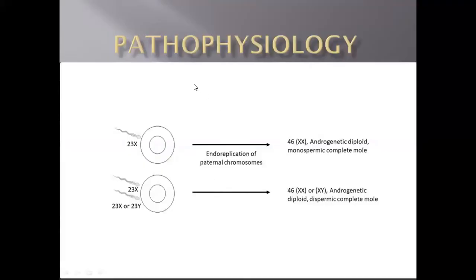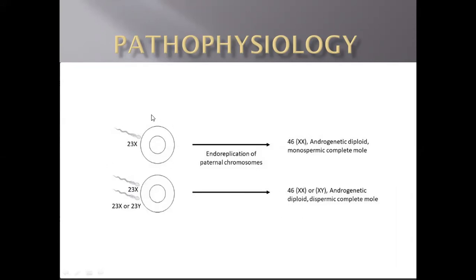Regarding pathophysiology: in 80% of cases, one spermatozoon fertilizes an empty ovum — an ovum that has lost its nucleus or has no chromosomes. The spermatozoon undergoes auto-reduplication, causing formation of a diploid number of chromosomes. In the remaining 20%, two spermatozoa with haploid numbers fertilize the empty ovum, also causing a diploid chromosome number. Because the ovum is completely empty with no chromosomes, there is no fetal or maternal component.